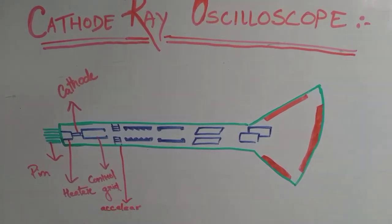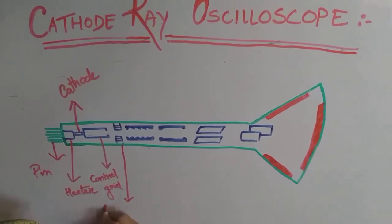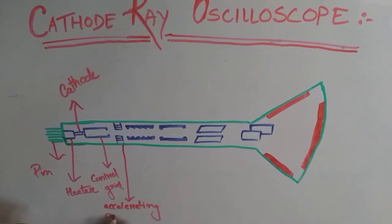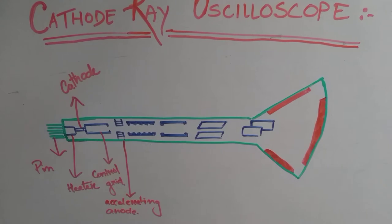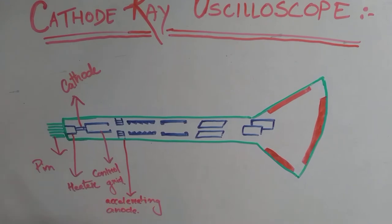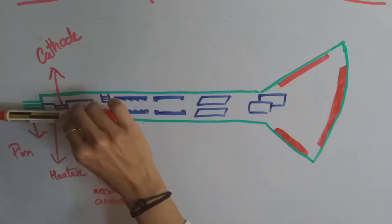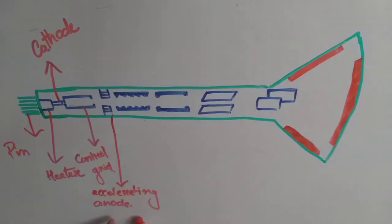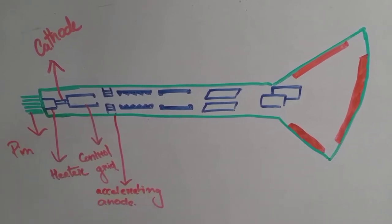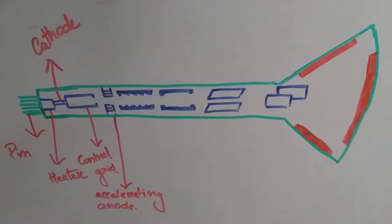The next main component is the accelerating anode. In the accelerating anode, a positive voltage is applied with respect to the cathode. As the name suggests, when the electron beam passes through this positive potential at the accelerating anode, it will accelerate the electrons. This is the functioning of the accelerating anode.